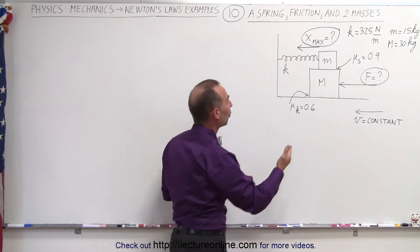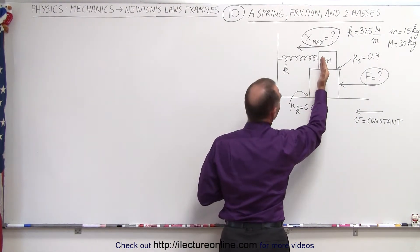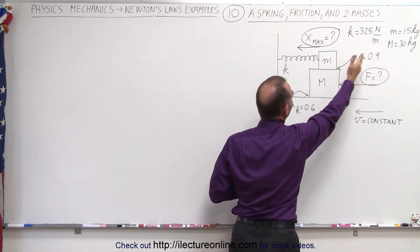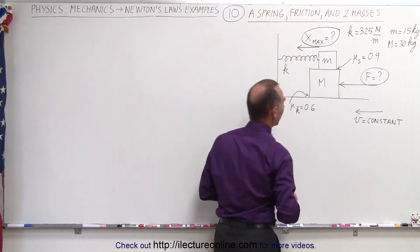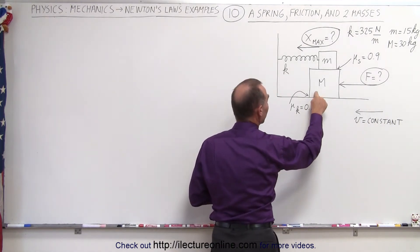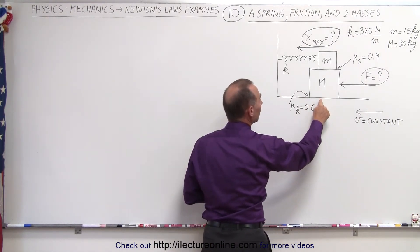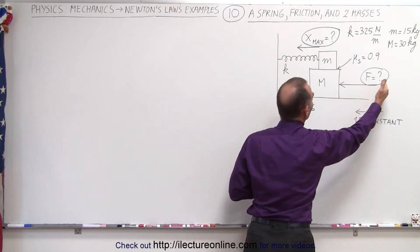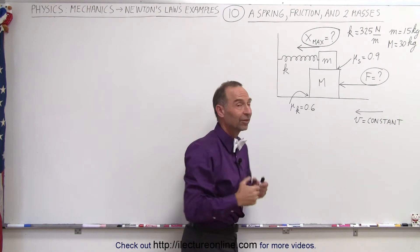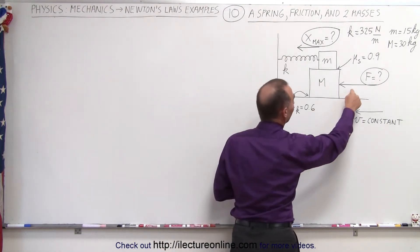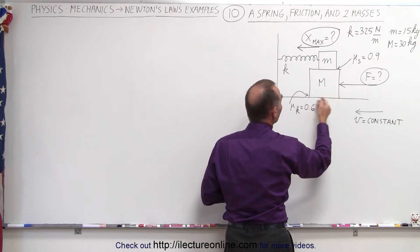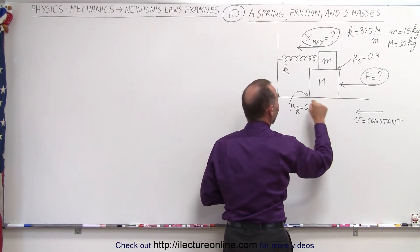The question is: what is the maximum distance that M can be pushed to the left before the spring begins to slide the small block across the big block? Secondly, realizing that there's a coefficient of kinetic friction between the big block and the floor, we can ask: what is the force required to reach that maximum distance? Because at that point, this force will have to overcome both the force of the spring plus the friction force between the block and the floor.